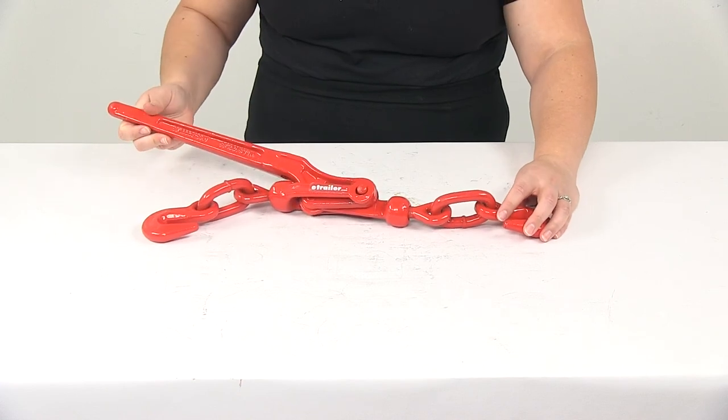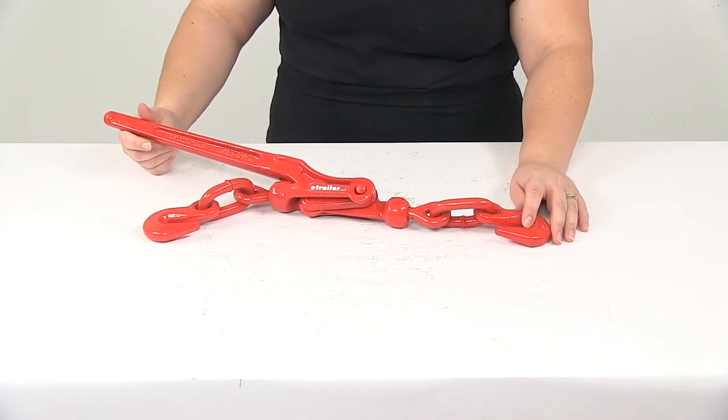So that's going to do it for our look at the Titan Chain Lever Type Load Binder for 5/16 inch to 3/8 inch thick chain.